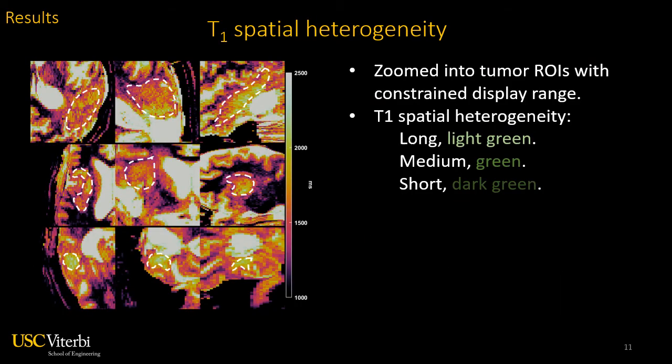In this slide, T1 display range is constrained to highlight spatial heterogeneity. Regions with long, medium, and short T1 values are highlighted by light green, green, and dark green arrows respectively. We can observe spatial heterogeneity in both tumor and peritumor regions. The heterogeneity might be related to local cellular environment, and it emphasizes the necessity of high-resolution T1 mapping for high-resolution quantitative DCE MRI.